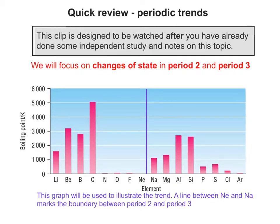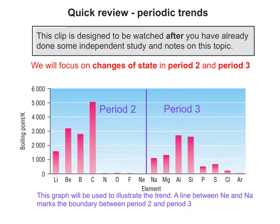Throughout the clip we'll use this graph to illustrate the trend and the reasons behind it. A line between neon and sodium can be used to mark the boundary between period 2 and period 3. When we're looking at individual cases I'll remove this label so we can use the space to illustrate further what's going on.